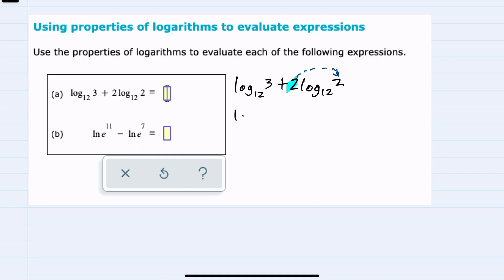So this second part of the expression simplifies to the log base 12 of 2 with the 2 that was in front of the log moved up to the power. So this is 2 to the second power, and I'll go ahead and simplify that as the log base 12 of 4.